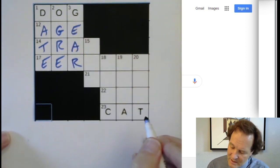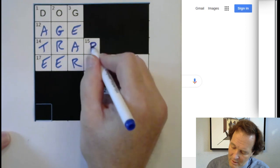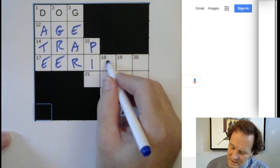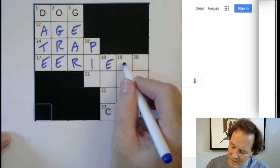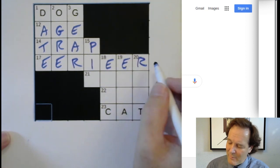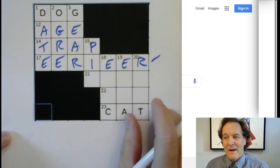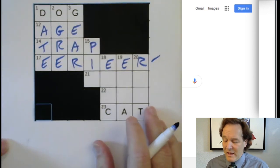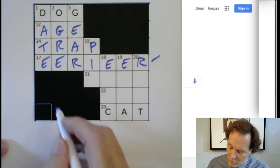Maybe this is going to be 'trap', maybe this is going to be 'eerie' — but then you can see we're getting 'eerier', is that even a word? So I'm already stuck where there's probably not a valid word. Humans have a hard time doing this completely manually.